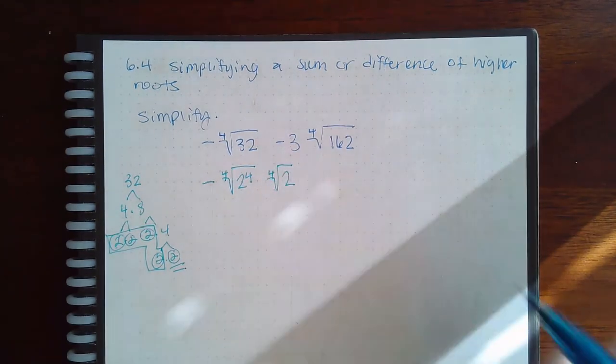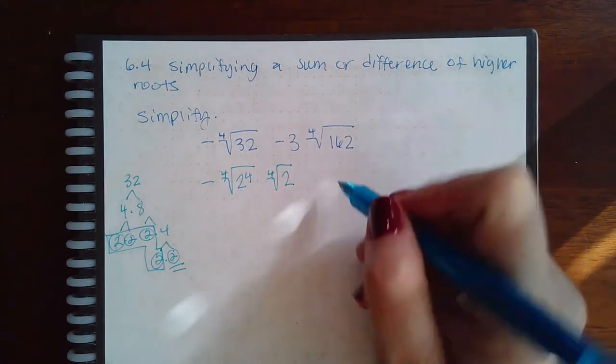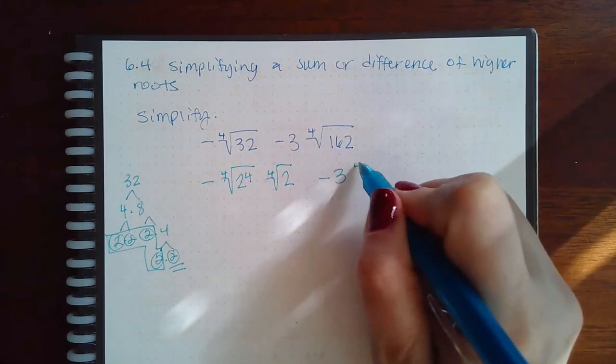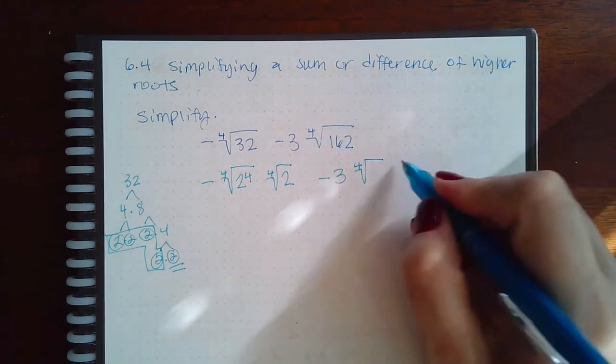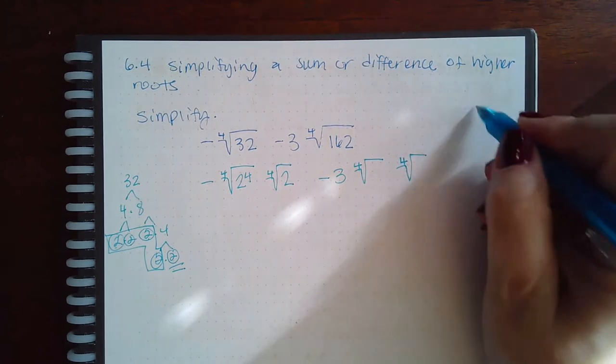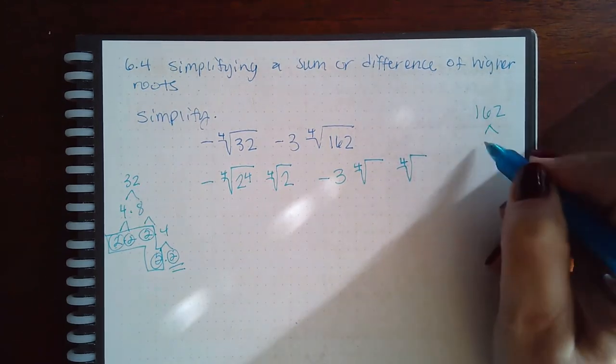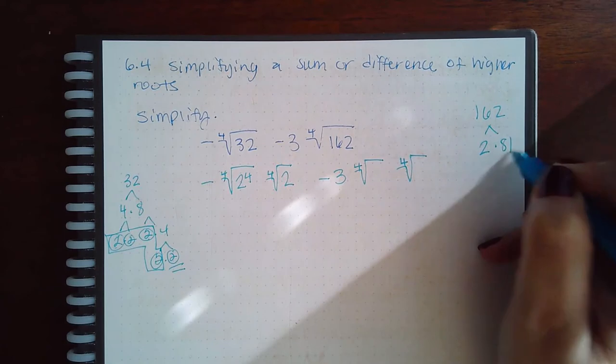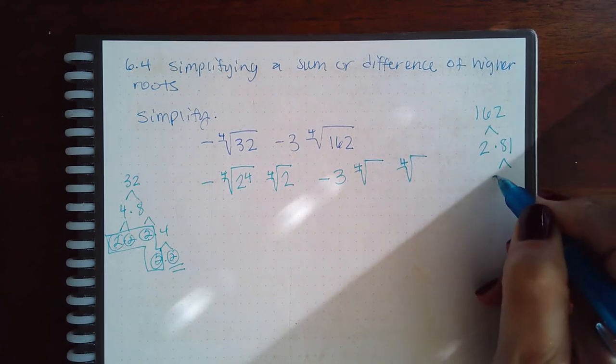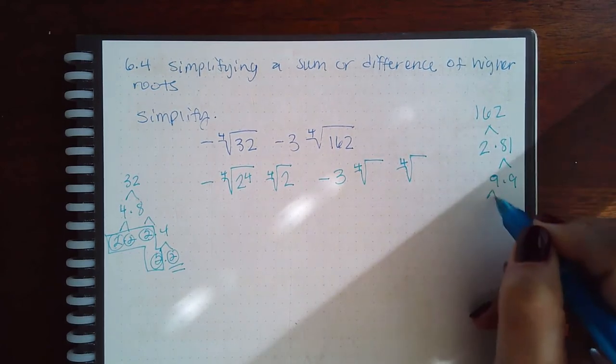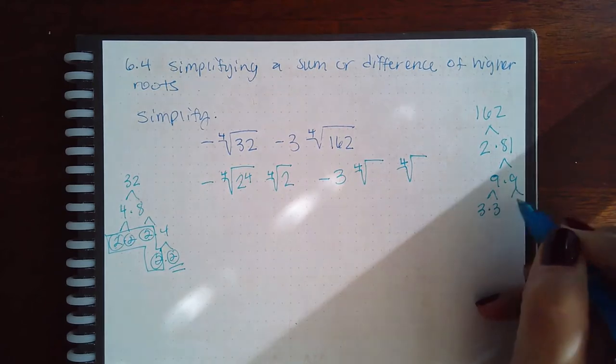Then I'm going to keep the minus three fourth root. Let's see: 162 is 2 times 81, which is 9 times 9, which is 3 times 3, and that guy is 3 times 3. So these are all of my primes.